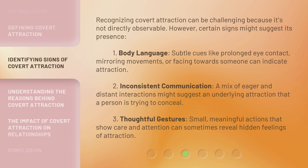Second, inconsistent communication: a mix of eager and distant interactions might suggest an underlying attraction that a person is trying to conceal. Third, thoughtful gestures: small, meaningful actions that show care and attention can sometimes reveal hidden feelings of attraction.